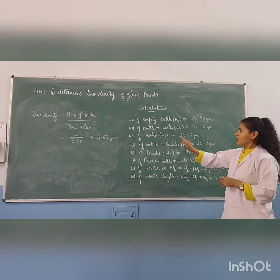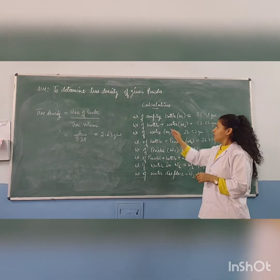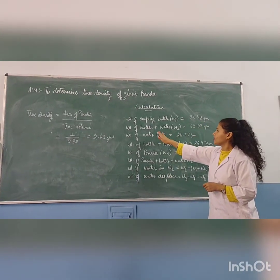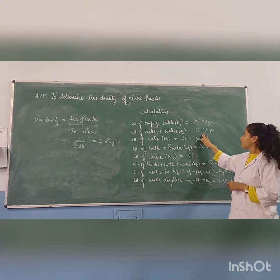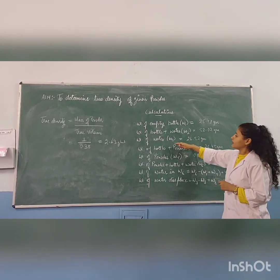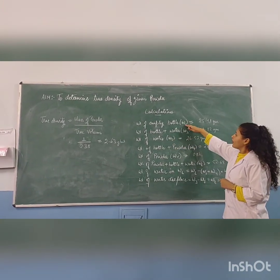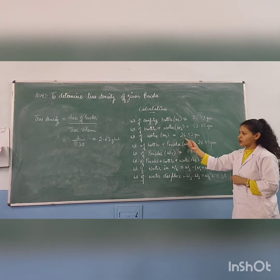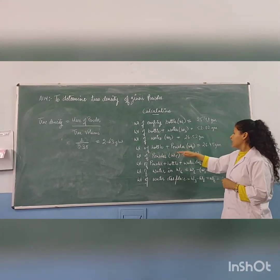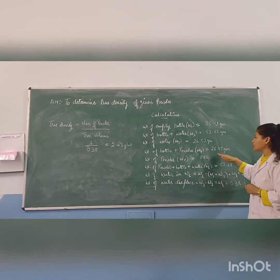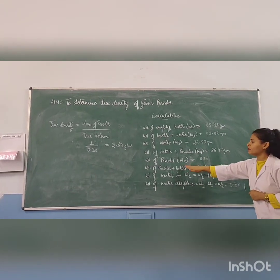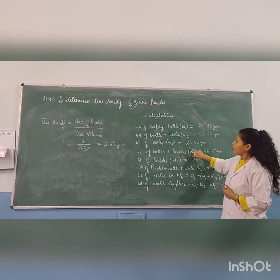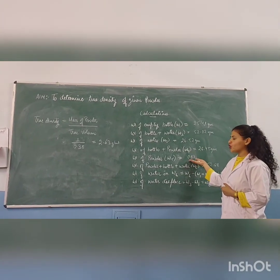We performed the experiment and recorded the readings. First, the empty bottle weight (W1) was found to be 25.40 grams. The weight of the bottle with water (W2) was found to be 52.02 grams. The weight of water is calculated by subtracting W1 from W2, giving 26.52 grams. The weight of the bottle with powder (W4) was found to be 26.45 grams. The weight of the powder (W5) is calculated by subtracting W1 from W4, giving 0.87 grams.